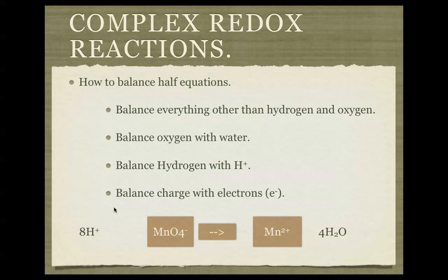My charge on this side is seven positive, because we have eight positive hydrogen and one negative here. So overall, it's seven positive. To get from seven down to two, I need five electrons on this side of my reaction. So there it is there.